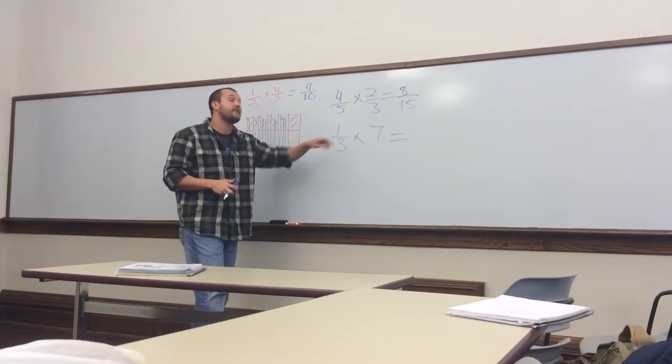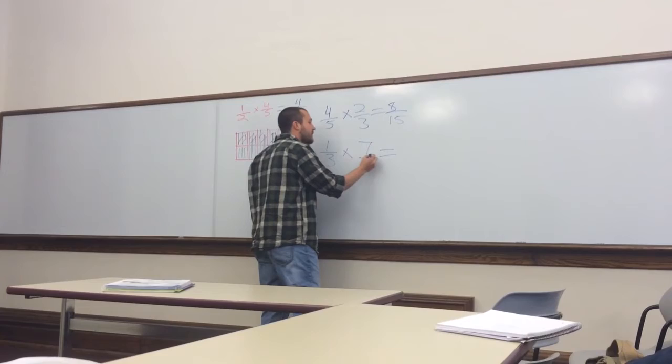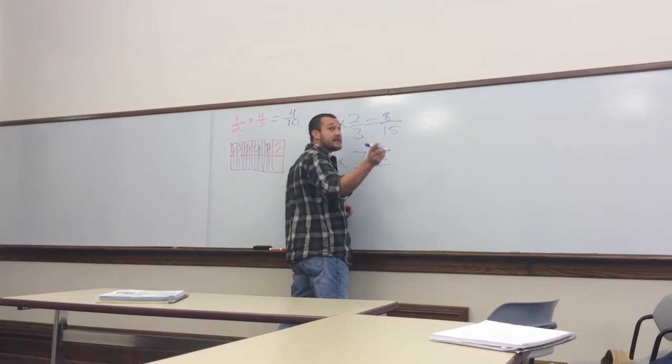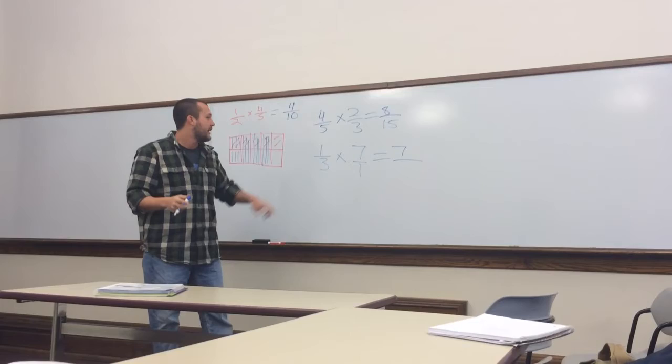We could do that. That would be very good. What would the 7 equal? I guess it would be 7 over 1. Exactly, 7 over 1. So then what would our next step be, Brent? 1 times 7. Exactly. 1 times 7, then that is equal to? 7. Nailed it.